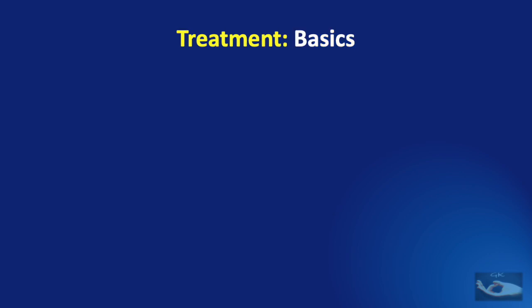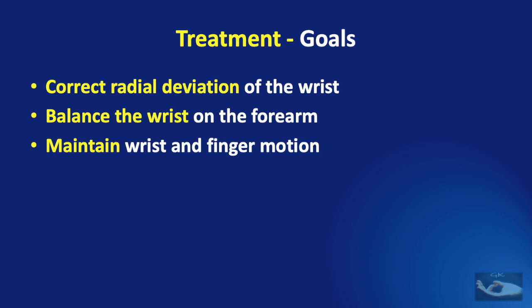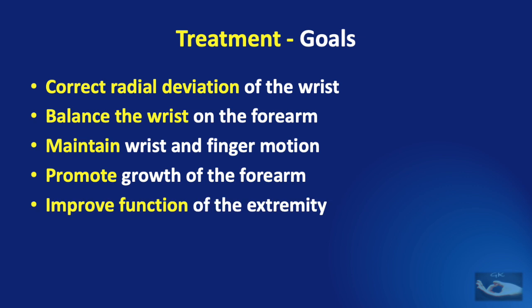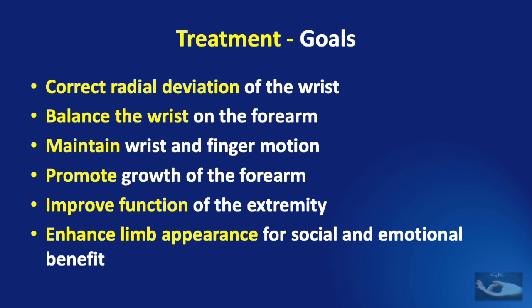The goals of treatment of radial club hand are to correct the radial deviation of the wrist, balance the wrist on the forearm, maintain wrist and finger motion, promote growth of the forearm, improve function of the extremity, and enhance limb appearance for social and emotional benefit. The options available are no treatment, non-surgical management, and surgical management. Details of treatment will be covered in a subsequent video. Please click on the shown links to see more about embryology and classification of congenital hand differences, and subscribe to stay connected with the latest in hand surgery, plastic surgery, trauma surgery, and ethics.